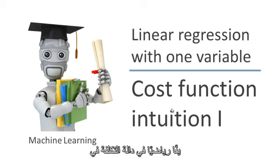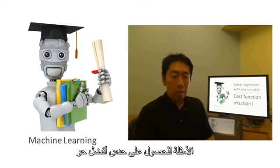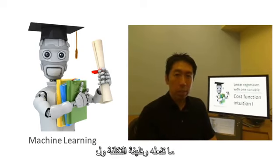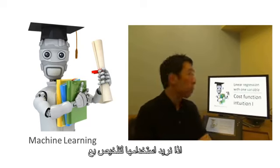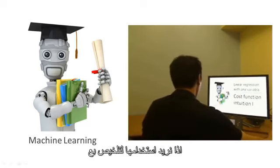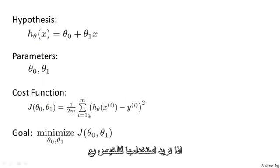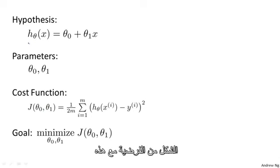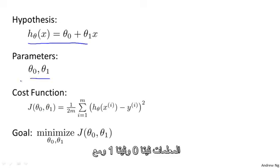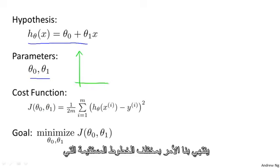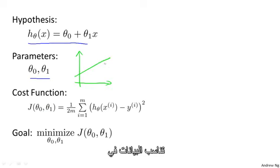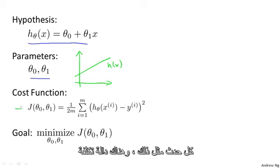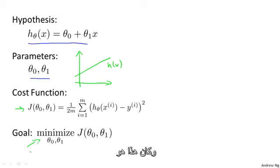In the previous video, we gave a mathematical definition of the cost function. In this video, let's look at some examples to get better intuition about what the cost function is doing and why we want to use it. To recap, we want to fit a straight line to our data. So we had this form of the hypothesis with parameters theta zero and theta one. With different choices of the parameters, we end up with different straight line fits to the data. And there's a cost function — that was our optimization objective.